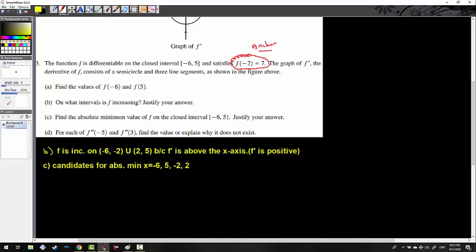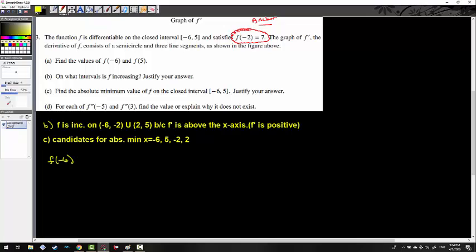After we've identified the absolute min to max candidates, let's find out what those values are of the function. Good thing is, 3 out of these 4 answers, we already have. Because f(-6) is equal to 3, f(5) is 10 minus 2π, f(-2) is equal to 7. So realistically with c, the only thing we have to figure out is what f(2) is. So it's almost like we're back to a, except now we're finding out a different value.